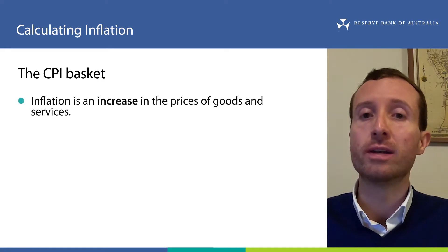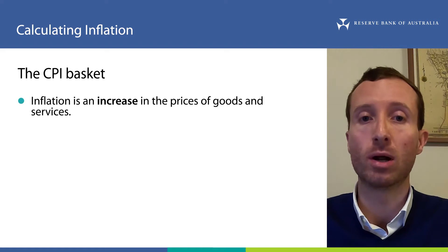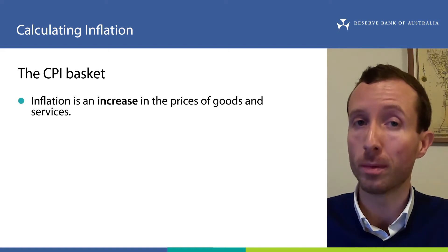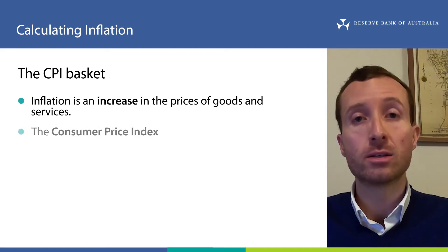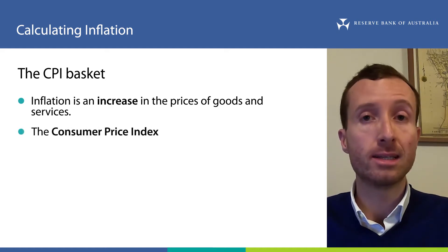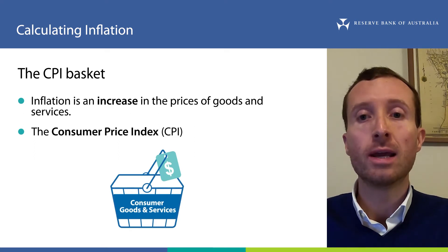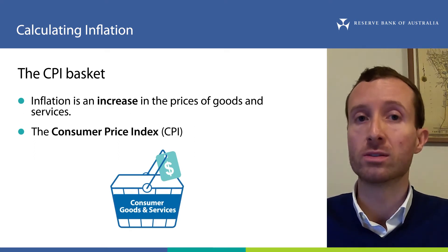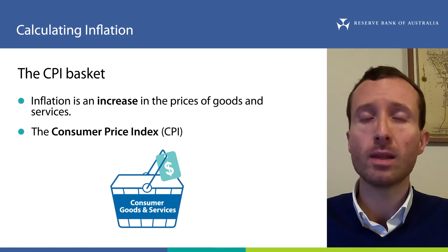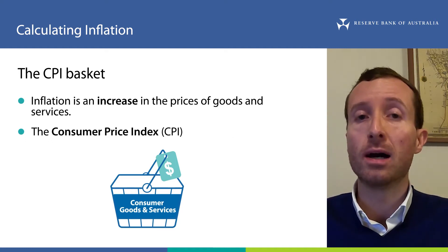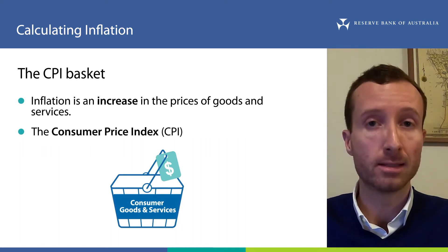In the introduction video, we saw that inflation is generally defined as an increase in the prices of goods and services in the economy. The most well-known way to measure inflation is a Consumer Price Index, or CPI, which measures the percentage change in the price of a basket of goods and services purchased by the average household. In Australia, the CPI is calculated by the Australian Bureau of Statistics, the ABS.